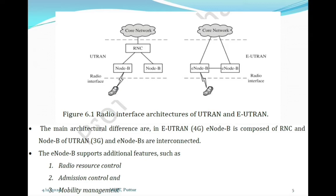Compared to the traditional Node B, E Node B supports additional features: radio resource control, admission control, and mobility management, which were not present in UTRAN. This simpler structure simplifies network operation and allows for higher throughput and lower latency over the radio interface.